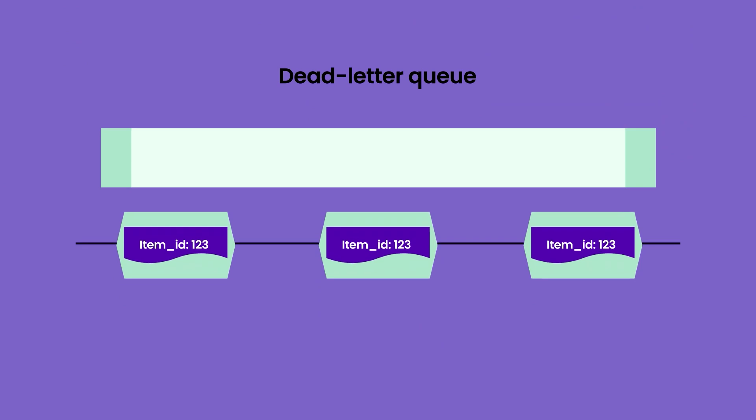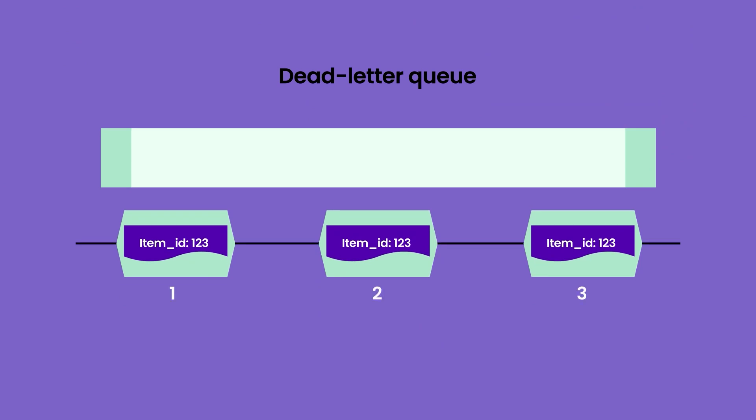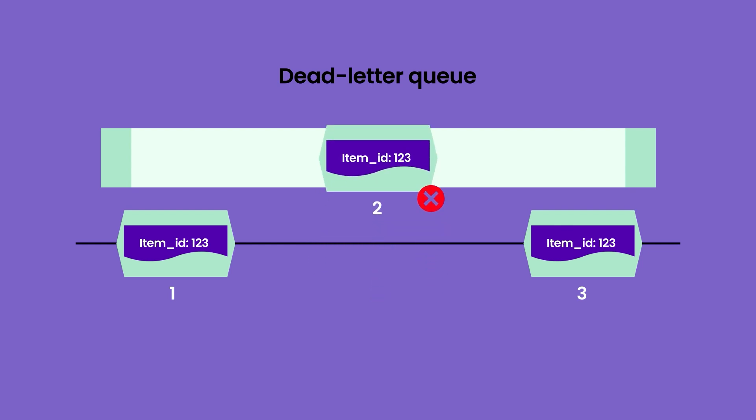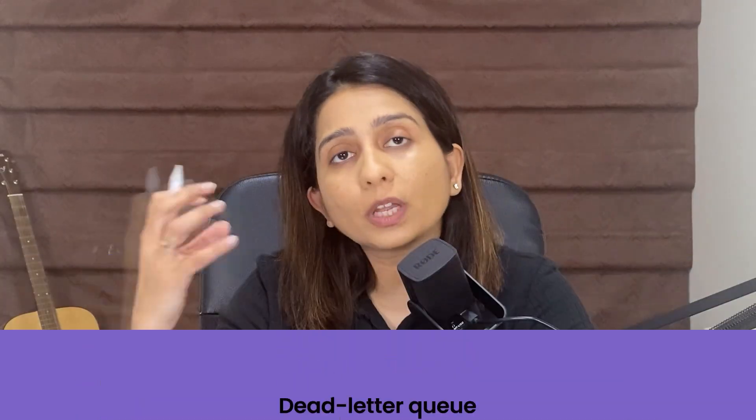Now, what happens if messages cannot be delivered or something fails? In case of queue-based consumers, when messages cannot be consumed, there is a concept called a dead letter queue. All messages that couldn't be consumed — for example message two — are removed from the main queue and placed onto the dead letter queue. You can then write logic to check the dead letter queue periodically and decide whether to republish the message or remove it, depending on your implementation.